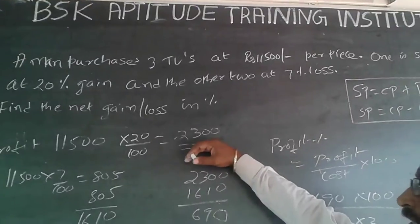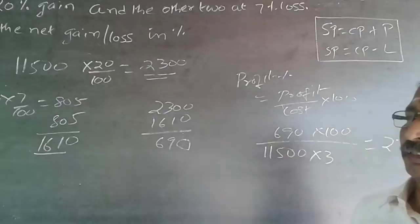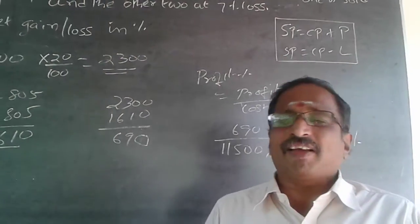First find out this profit. Then the loss. Reduce it. Then 690 divided by cost into 100 will give you the percentage. This is the easier way of doing it.